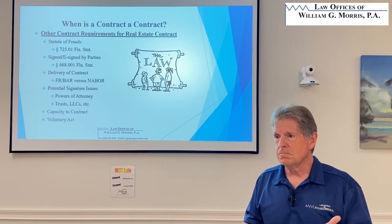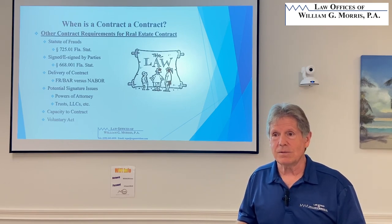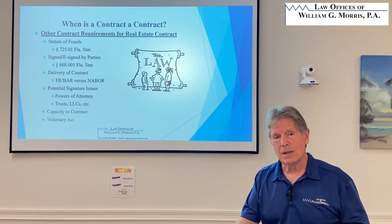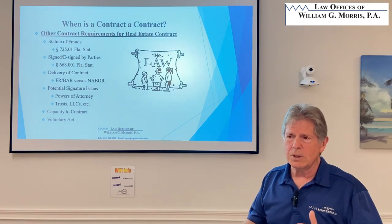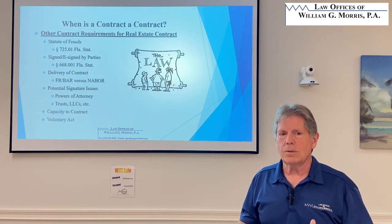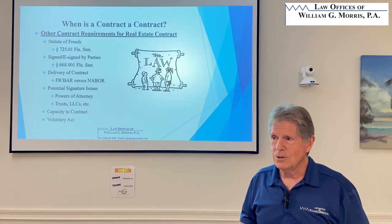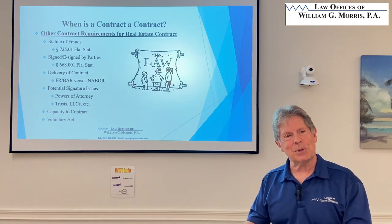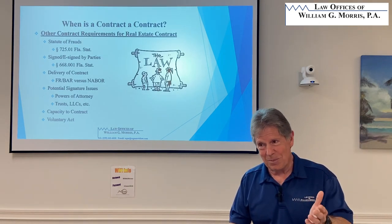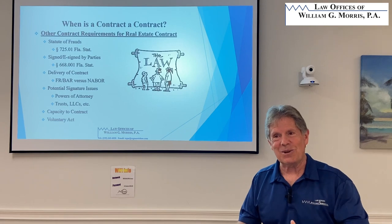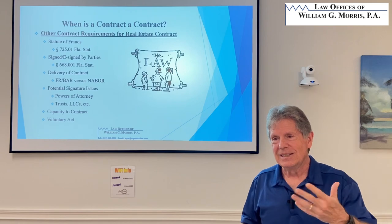Whereas if the parents die and their kids inherit the property, the kids get a step-up basis — they get it as if they bought it for what it was worth when their parents died. If they sell a property bought for $250,000 now worth $2.5 million, with a $500,000 primary residence exemption, they're paying capital gains tax on $2.2 million in gain. A lot of those folks are much better off letting their kids inherit the property — the kids sell it for $3 million and pay no income tax on that.